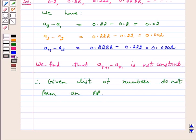Hence, our answer for the above question is no, 0.2, 0.22, 0.222, 0.2222 do not form an AP.